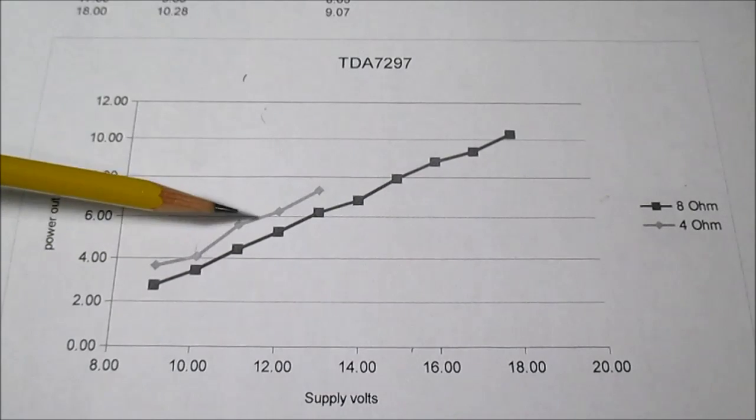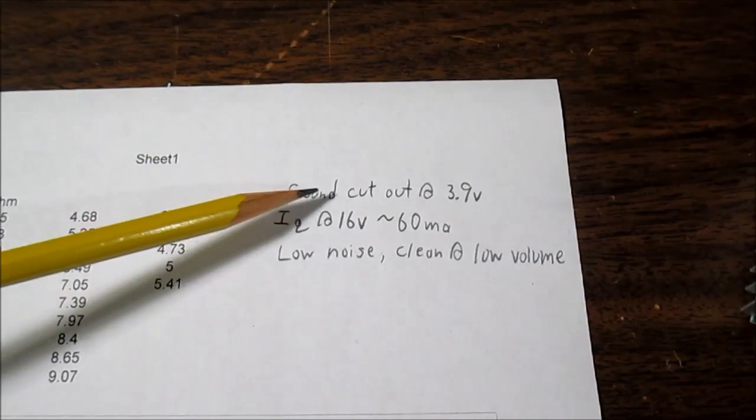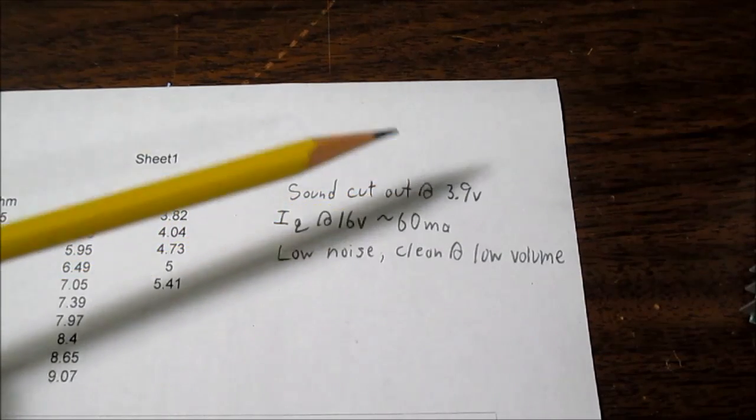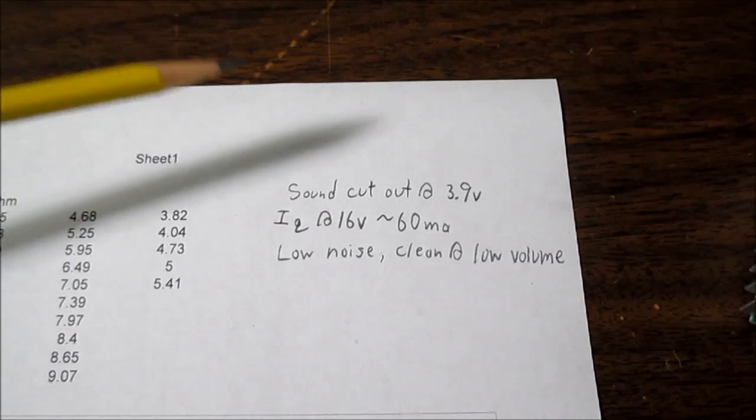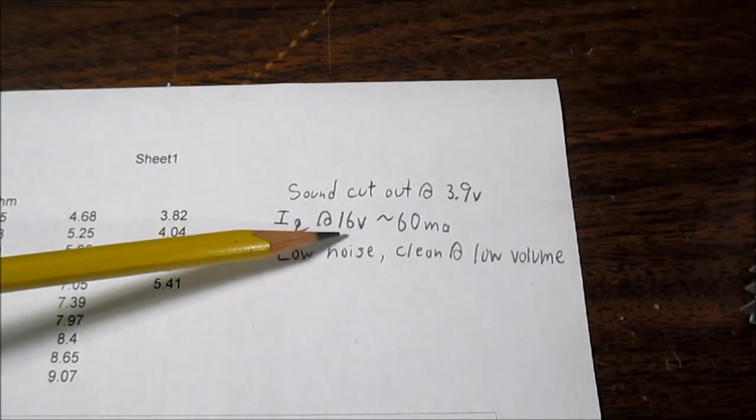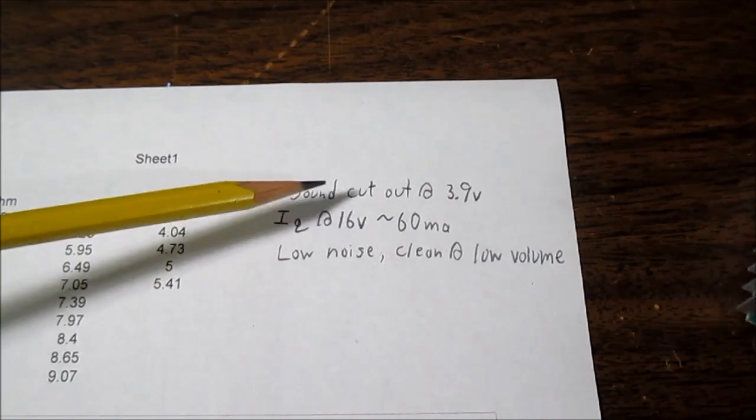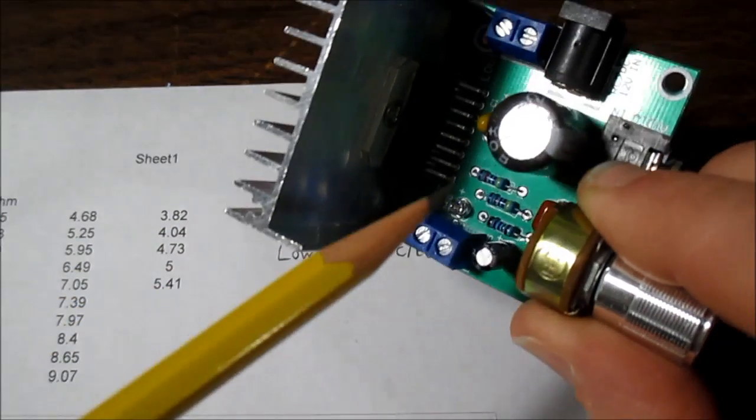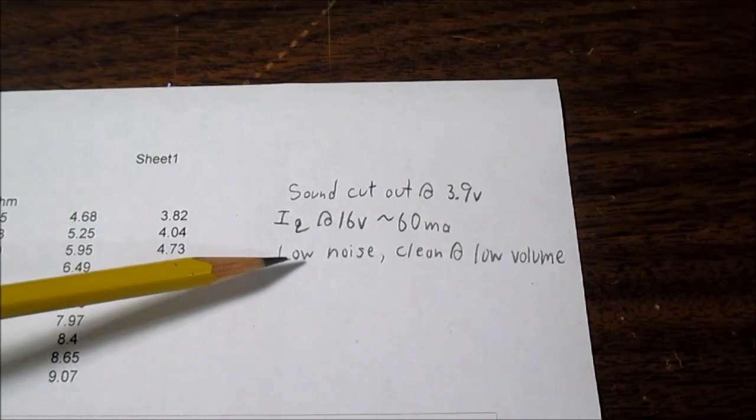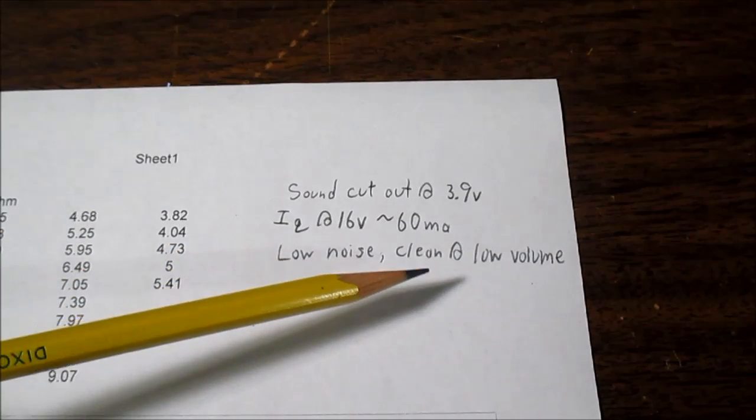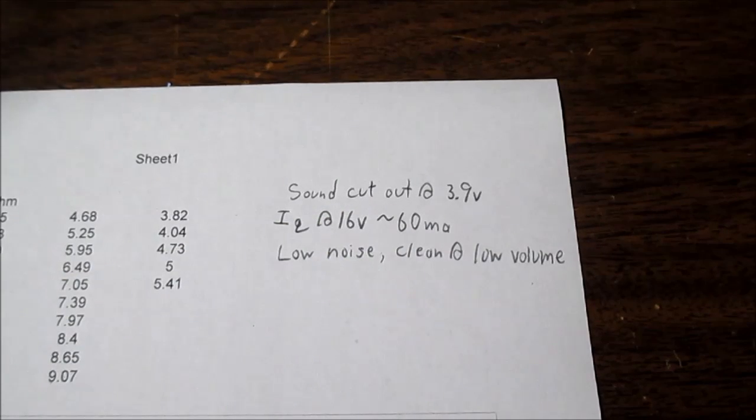In summary, the sound cut out at 3.9 volts though I found there was some distortion when you run it below 9 volts. Whether you can hear that or not is debatable. Quiescent current at 16 volts was 60 milliamps and I'm sure some of that was used up by the bright blue LED.